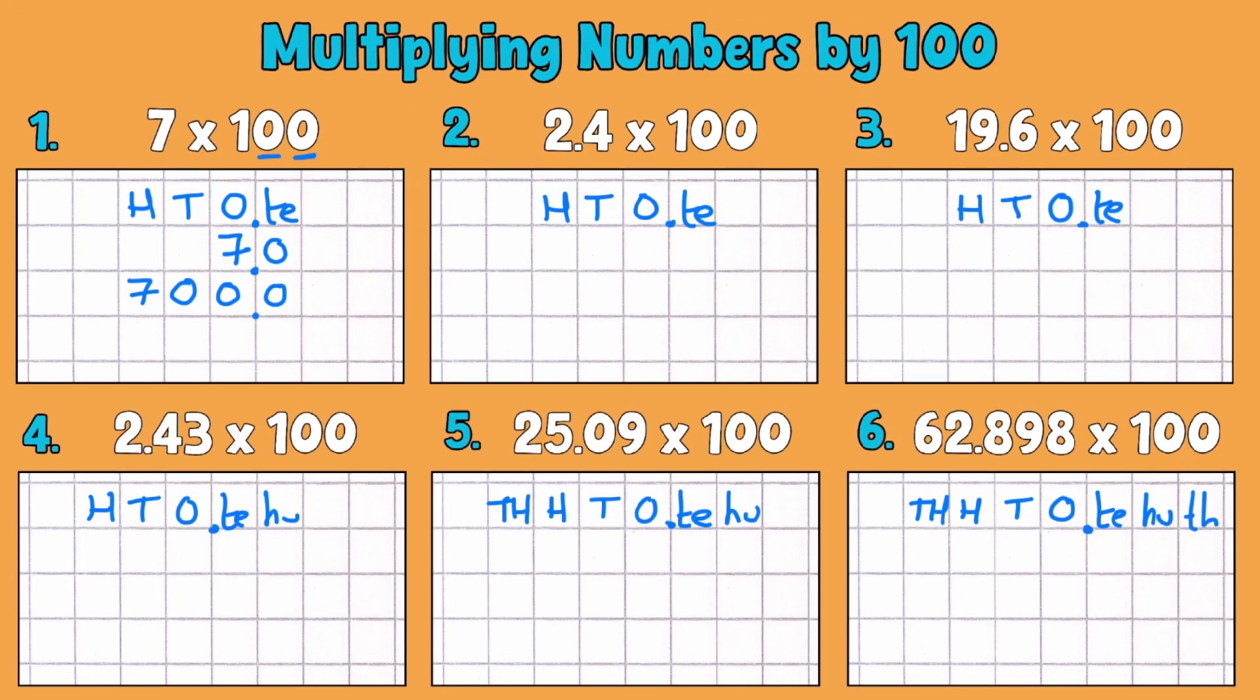Let's move on to our next example. So we've got 2.4 and we're wanting to make that 100 times bigger. So the same as before we'll do our two movements to the left because the number's getting larger. So it will end up being much larger than 2.4.